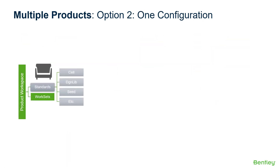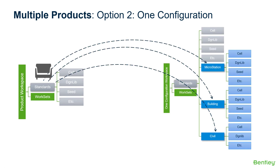Option two is called one configuration. With this, we take and create individual folders underneath the workspace standards and group them by product groups — for example, MicroStation, building, and civil.